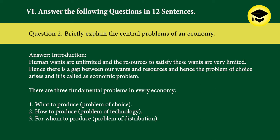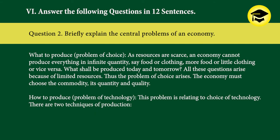Question 2: Briefly explain the central problems of an economy. Introduction: Human wants are unlimited and the resources to satisfy these wants are very limited; hence there is a gap between our wants and resources, giving rise to the problem of choice, called the economic problem. There are three fundamental problems: one — what to produce (problem of choice); two — how to produce (problem of technology); three — for whom to produce (problem of distribution). What to produce: as resources are scarce, an economy cannot produce everything in infinite quantity. The economy must choose the commodity, its quantity and quality.